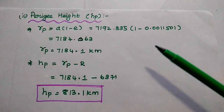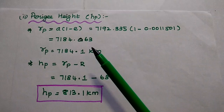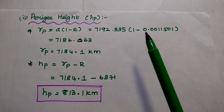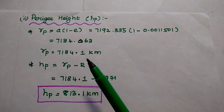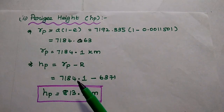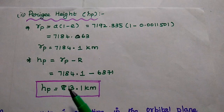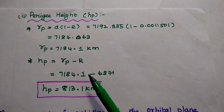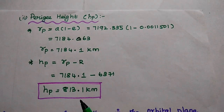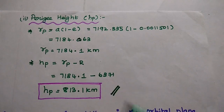Next, we are going to find out the perigee height. For that we have to get the value of RP. RP is equal to A into (1 minus E). Substituting the values of A and E in this formula, we can get RP equal to 7184.1 km. Then substituting this value in the perigee height formula RP minus capital R: 7184.1 minus 6371, that is equal to 813.1 km.